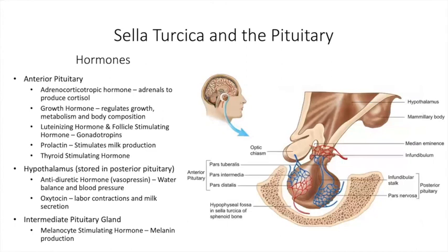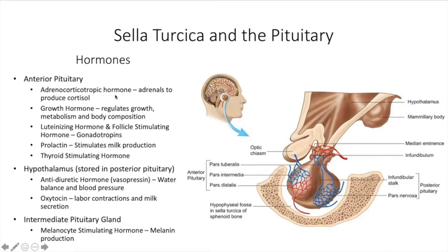Regarding the sella turcica: I've outlined here all of the hormones coming from the various parts of the sella turcica that we know in modern medicine. The anterior pituitary gives you adrenocorticotropic hormone, growth hormone, luteinizing and follicle stimulating hormones, prolactin, and thyroid stimulating hormone. The hypothalamus, stored in the posterior pituitary, gives ADH, vasopressin, and oxytocin. The intermediate pituitary produces melanocyte stimulating hormone. That's how we see it today in our current medical view.